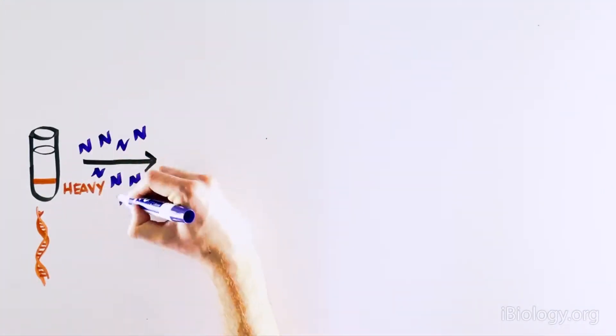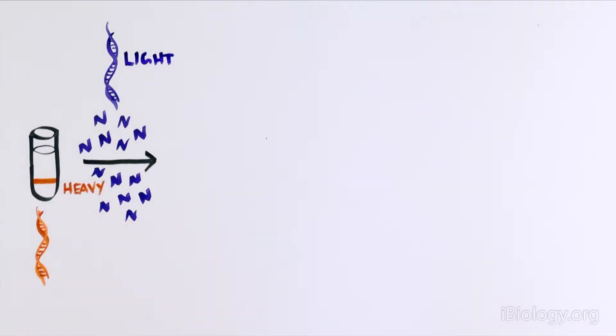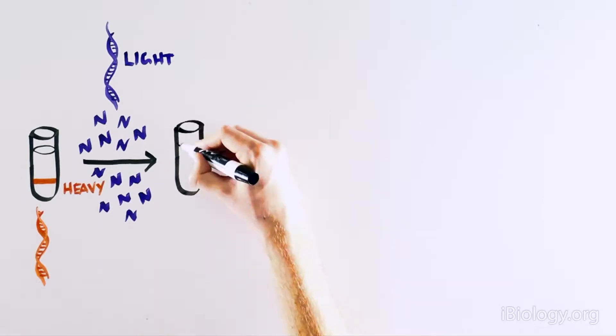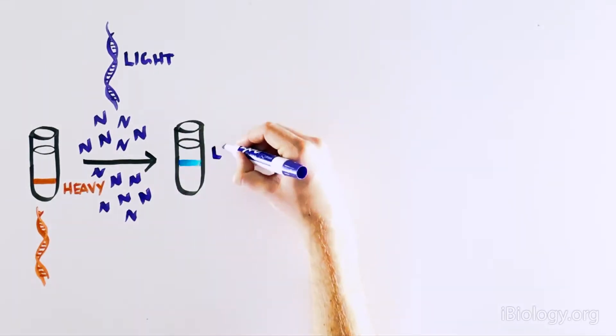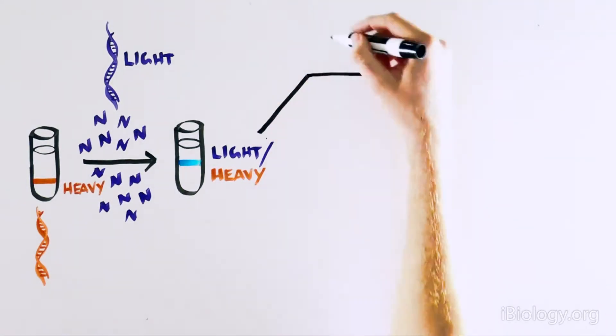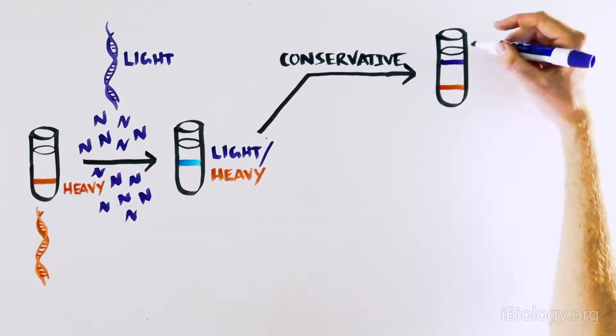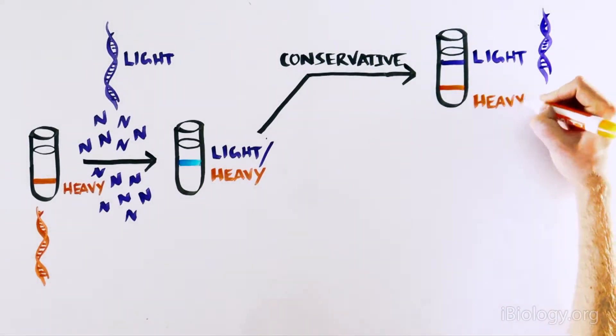Then they started growing these cells in the presence of light nitrogen, so all of the DNA made in subsequent cell divisions would be lighter. After one cell division, the DNA was half as heavy, so half of the DNA molecule contained heavy nitrogen and the other half didn't. This is not in line with the conservative DNA replication model, which would predict that one molecule would be all light and the other all heavy.